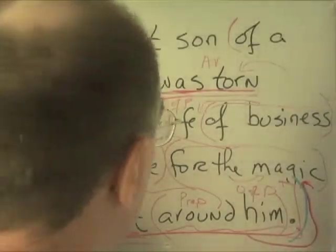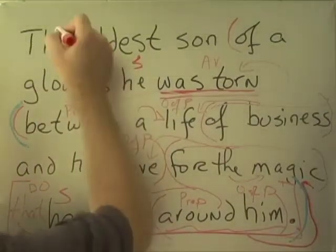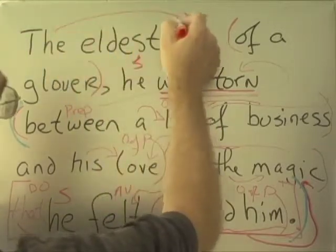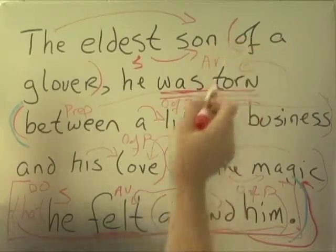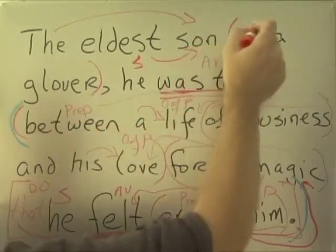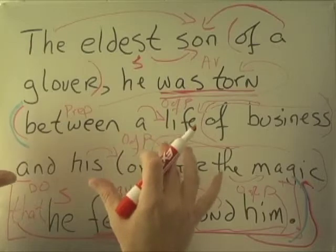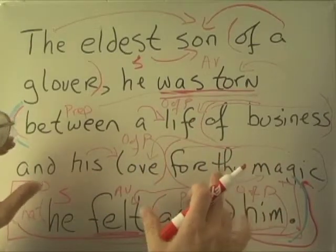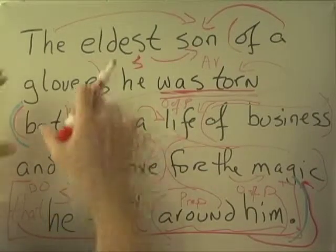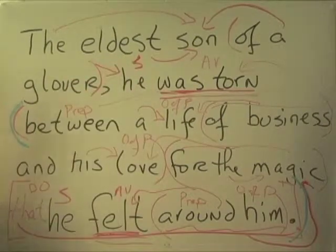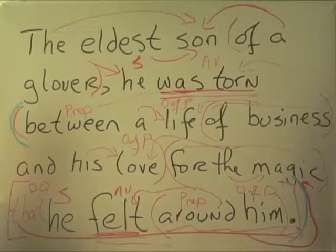We've got this opening few words too. A definite article modifying 'son' — its eldest son — a prepositional phrase with its object and a little modifier, all modifying 'son.' The entire phrase 'the eldest son of a Glover,' cut down to just 'son,' is a noun phrase modifying the subject. It's a bit like an appositive — a noun phrase opening the sentence and modifying 'he.'